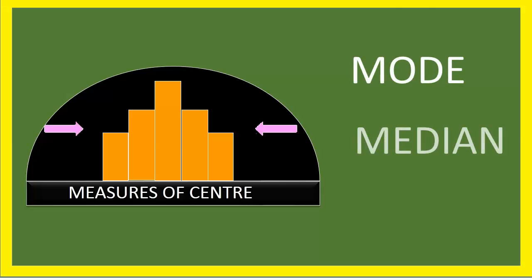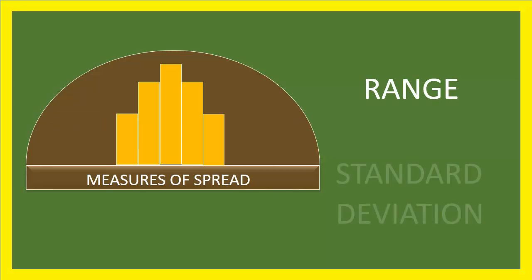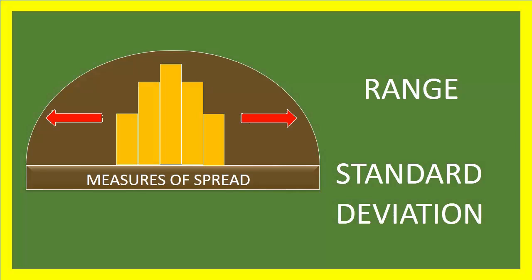Mode, median, and mean measure the center or central tendency, whereas range and standard deviation are the measures of spread.